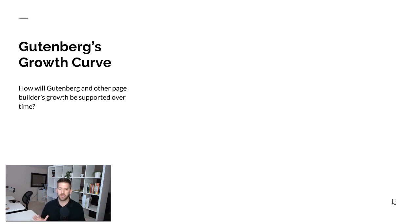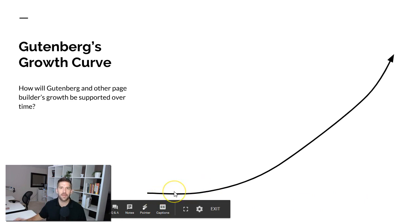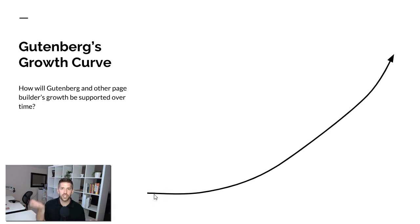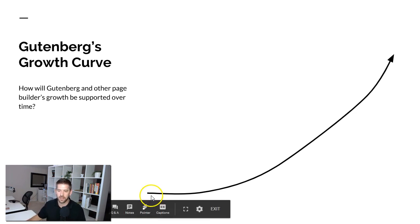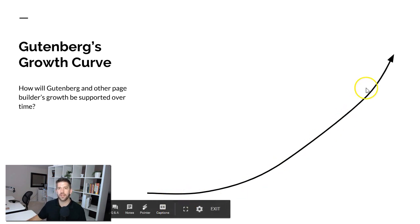Let's talk a little bit about growth curve. How will Gutenberg and other page builders' growth be supported over time? Looking at my graph of the Gutenberg growth curve: right here we're in the infancy, we're launching, it's not the most development that's going into it yet. But you can see there's early land grabs — cadence blocks, ultimate add-ons for Gutenberg, stackable. There are these few plugins really shining to the top of the pile and getting a lot of momentum in the initial land grab for market share within Gutenberg. As it becomes the de facto standard, as it gets more mature, as people learn how to use Gutenberg, you'll see that growth curve increase.